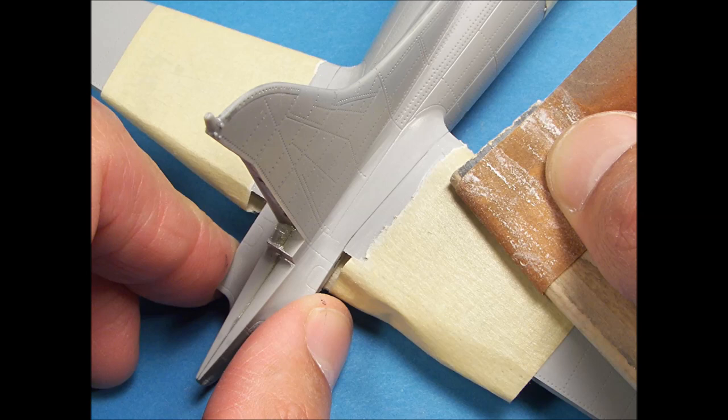To protect surface detail, cover them with masking tape. Another benefit of using sandpaper wrapped around balsa wood strips is that it helps to limit surface detail damage.